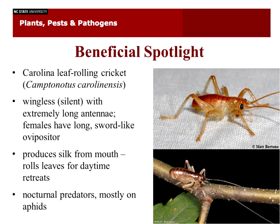I want to include a beneficial insect spotlight each time — not just discussing damaging arthropods, but things that actually help your garden. Today I'm spotlighting one of my favorite insects in North Carolina: the Carolina leaf rolling cricket, Camptonotus carolinensis. This is the only member of its family, Gryllacrididae, in the entire U.S., and it's named after Carolina — which is great. They are wingless crickets with extremely long antennae, and females have a long sword-like ovipositor like katydids and crickets. One really interesting thing about this species is that it produces silk from its mouth.